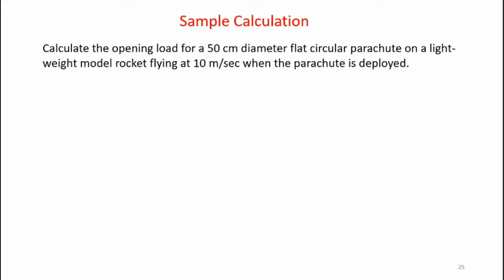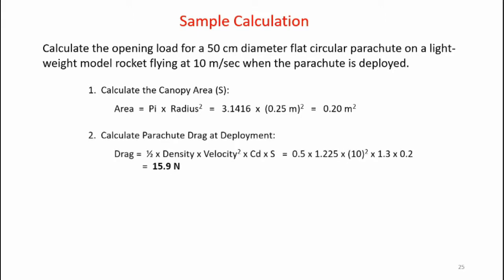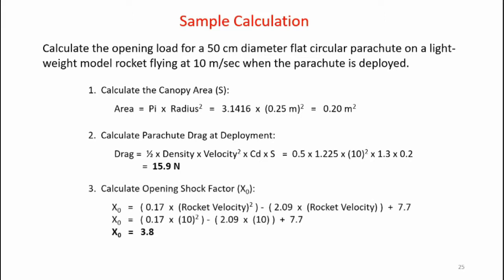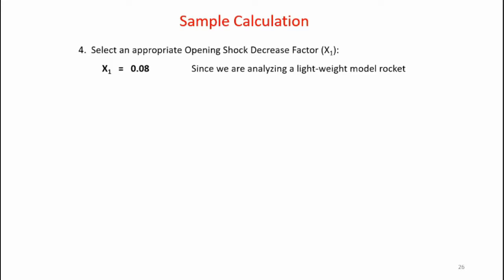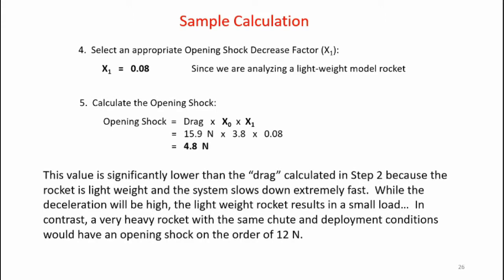Let's do a sample calculation — the opening load for a 50 centimeter flat circular parachute on a lightweight model rocket flying at 10 meters per second when the parachute is deployed. First, we calculate the canopy area: area equals pi r squared, which comes out to 0.2 meters squared. Then calculate the instantaneous drag if it pops open fully at 10 meters per second — drag equals one-half rho v squared times CdS, which comes out to 15.9 newtons. Next, we calculate the opening shock factor x-sub-zero using the equation, which comes out to 3.8. Since we have a small model rocket, we use x-sub-one of 0.08. The opening shock is the drag times x-sub-zero times x-sub-one, which comes out to 4.8 newtons. This value is significantly lower than the 15.9 newton drag calculated earlier because the rocket is lightweight and the system slows down extremely fast — while the deceleration will be high, the lightweight rocket results in a small load.